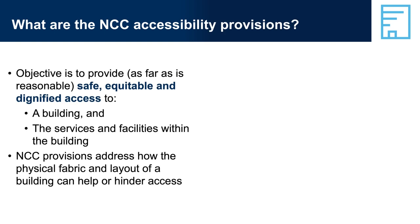What are the NCC accessibility provisions? The NCC sets out the minimum requirements for the provision of safe, equitable and dignified access to buildings. The overall access objectives are to: ensure, as much as possible, that people can use buildings independently and with dignity; ensure that buildings provide a continuous accessible path of travel, one that does not include features that might impede safe, equitable and dignified movement and access to facilities; and provide, as far as reasonable, people with safe, equitable and dignified access to a building.